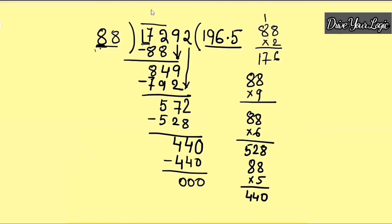So our answer is 196.5 and the remainder is 0. Our divisor is 88 and dividend is 17292. Whenever you get this type of long division question — no matter how big — just check the last digit of the divisor and compare with the corresponding digits of the dividend. If the dividend portion is smaller, take one extra digit. Be careful with your subtraction steps and don't make any mistakes there. That's all for today.